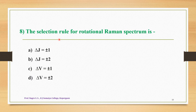Question 8: The selection rule for rotational Raman spectrum is — option A: ΔJ = ±1, option B: ΔJ = ±2, option C: ΔV = ±1, option D: ΔV = ±2. The correct answer is option B — the selection rule for rotational Raman spectrum is ΔJ = ±2.